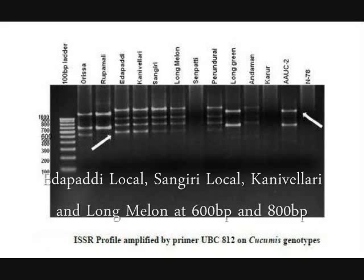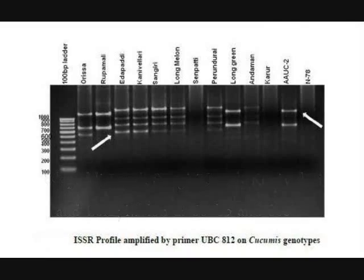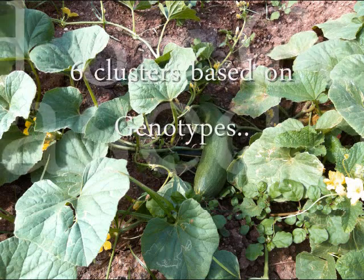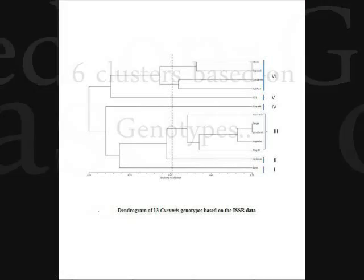Specific bands are also visible for Edapati Local, Sankagiri Local, Kannivalry, and Long Mylon at 600 base pairs and 800 base pairs. The 13 Cucumis genotypes formed 6 clusters based on genotypic value.